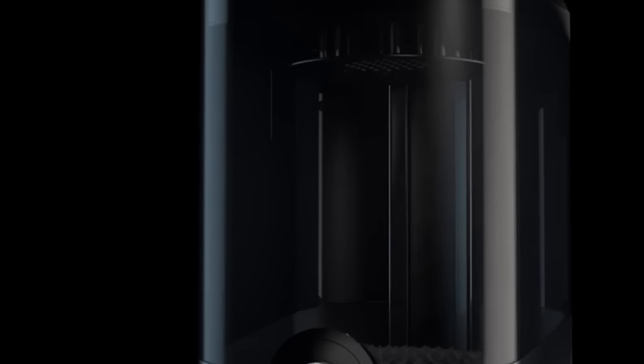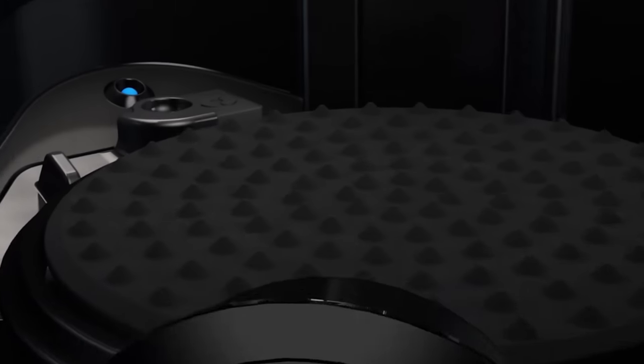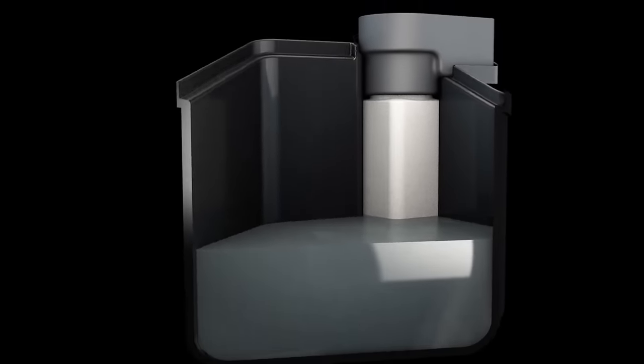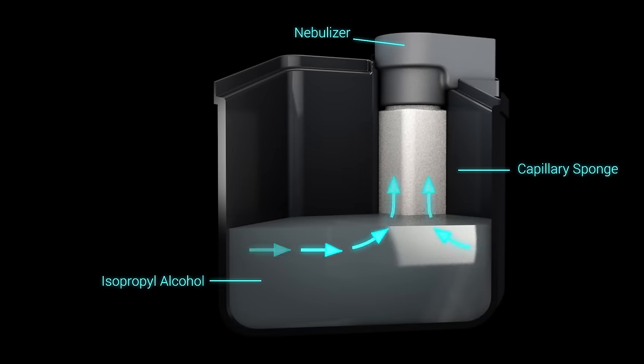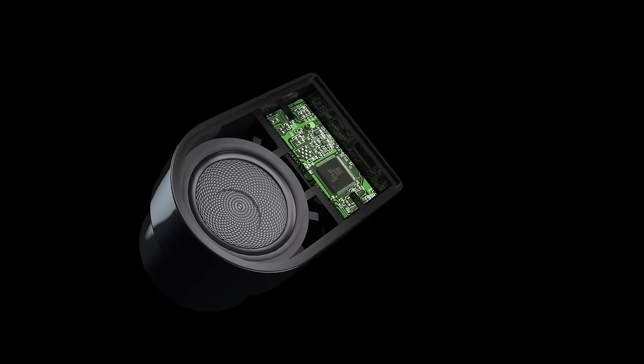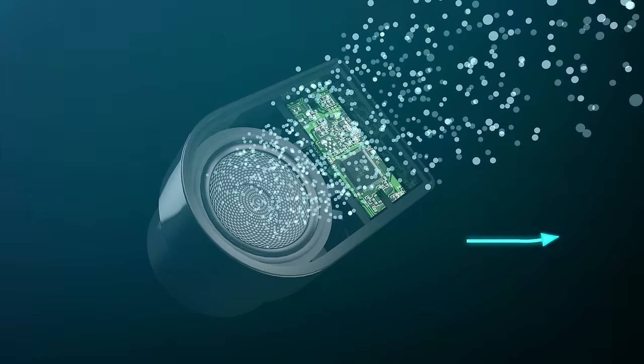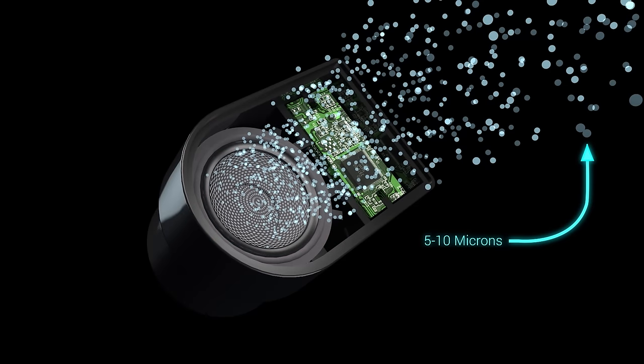PolySmooth is soluble in isopropyl alcohol. When a PolySmooth model is placed into the polisher, an ultrasonic nebulizer creates a fine mist in the chamber. Each particle of mist is typically 5 to 10 microns in diameter, so a very even coat of IPA is applied to every nook and cranny of your model.